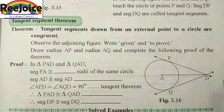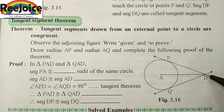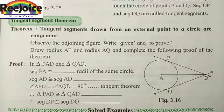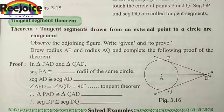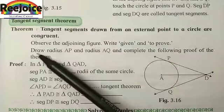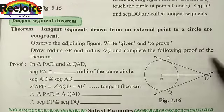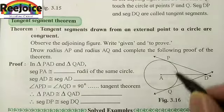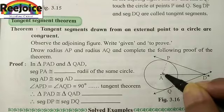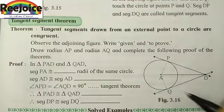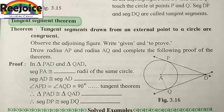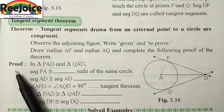In figure 3.16, point D is a point outside the circle. This point is outside the circle and two tangents — Tangent PD and Tangent QD — are drawn on the circle from point D. Observe the adjoining figure, write given and to prove, draw radius AP and radius AQ and complete the following proof of the theorem. We have to construct AP and AQ, which are the radii of the circle.